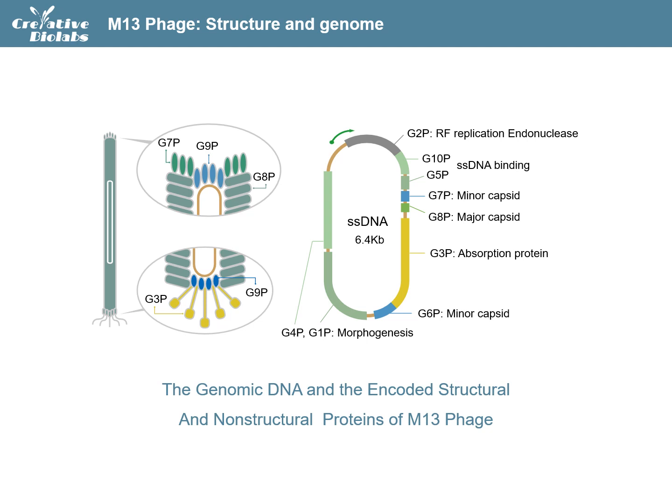The system based on the P8 region is usually applied in the display of small peptides with lower affinity, while the system based on the P3 region takes the advantage of displaying gene or DNA-encoded polypeptides with higher affinity. Thus, the P3 region is the most appropriate for antibody display.